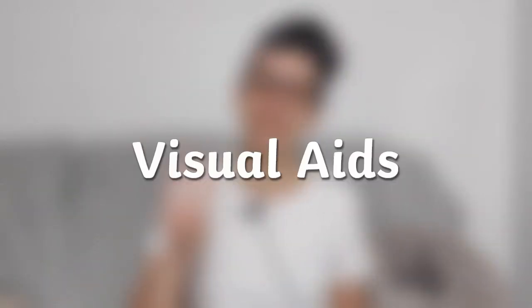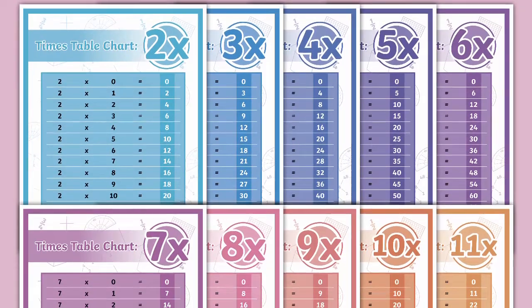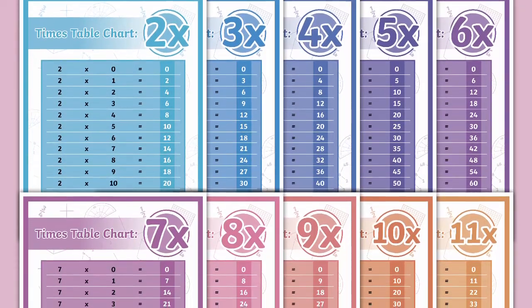Three: visual aids. For example, charts that show maths facts or the times tables can be really helpful, as well as drawing out diagrams. Having a display like a word wall can also help by exposing children to key terms and vocabulary they need to use during maths. By being frequently exposed to these words, it may make it more likely for them to stick.